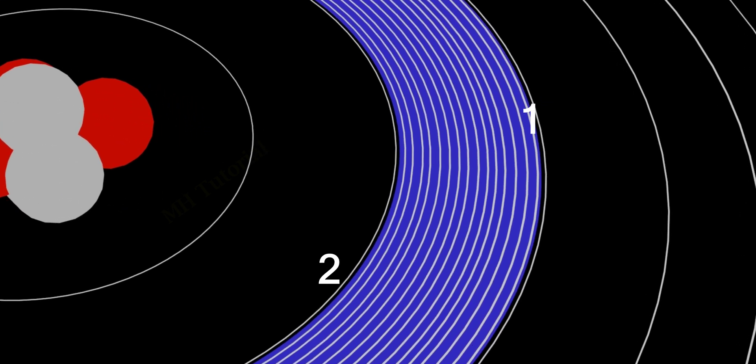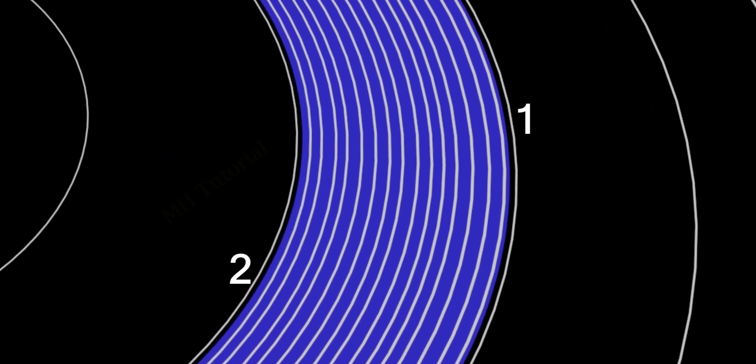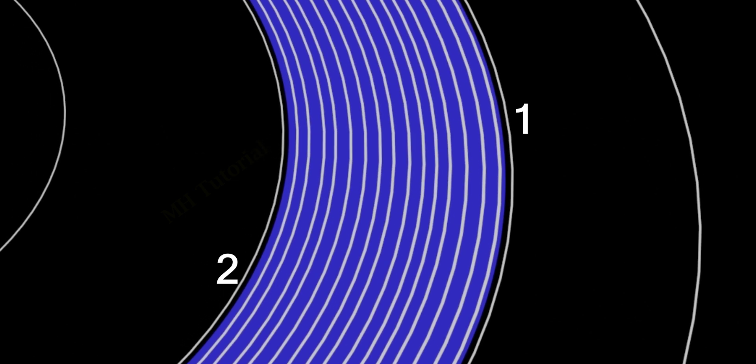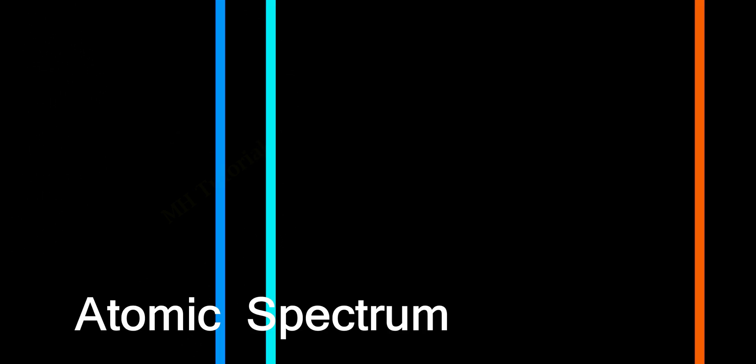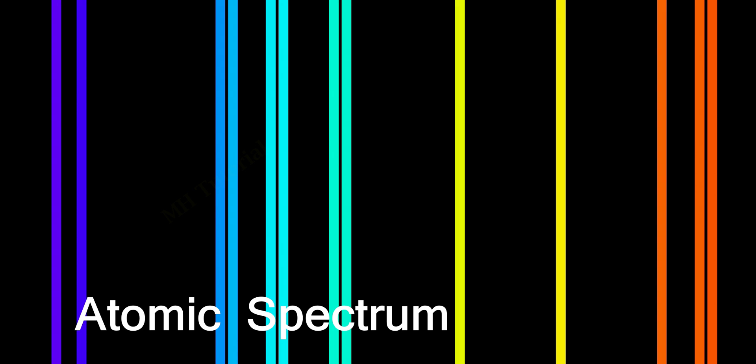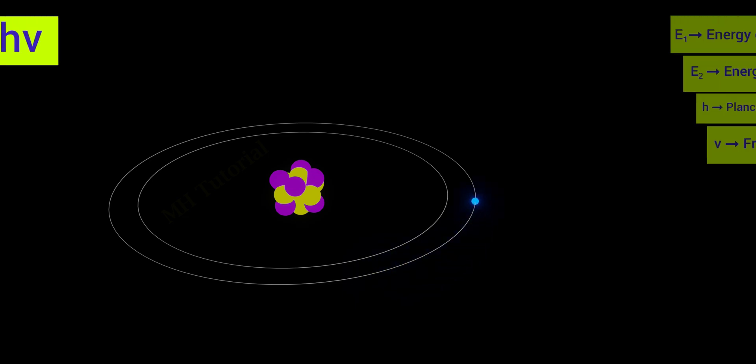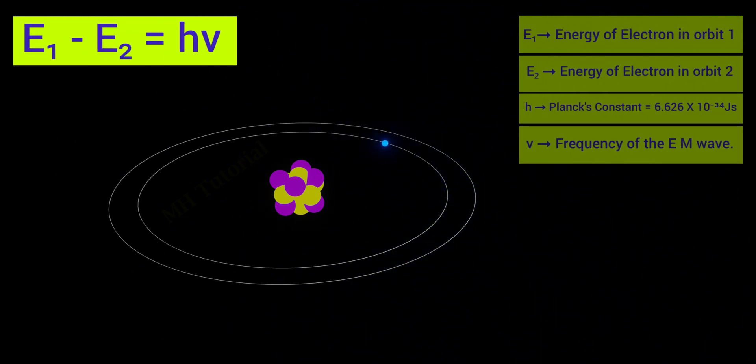An electron now can move from orbit one to orbit two through innumerable paths. Thus, it can release energy in many different ways. And its atomic spectra could have innumerable lines of frequency. Remember, during a transition from a higher orbit to a lower one, an electron emits energy in the form of electromagnetic wave.